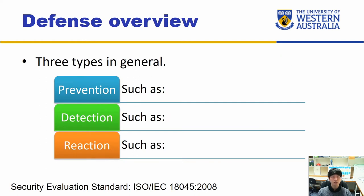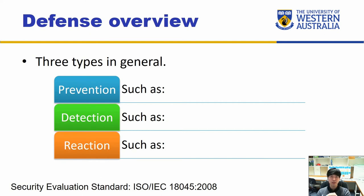In the mitigation section, it branches out into three subsections: prevention, detection, and reaction. Prevention is a mechanism built in to make sure that even when the attack happens, it will be blocked. What kind of example do you think will fall into prevention?